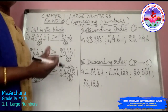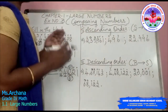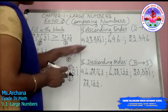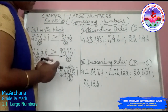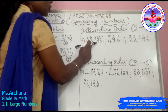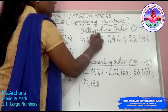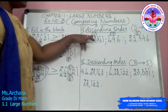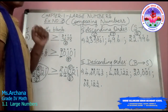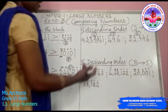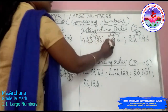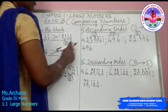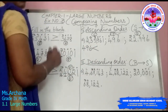Now we will see how to compare more than 2 sets of numbers. In ascending order, we always arrange numbers from the smallest to the greatest. I have 3 sets of numbers here. Counting the digits: the first number has 6 digits, the second has 3 digits, and the third has 5 digits. Since 3 is the smallest digit count, 496 is the first smallest number.